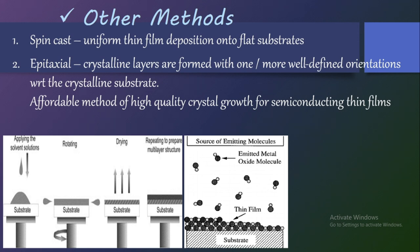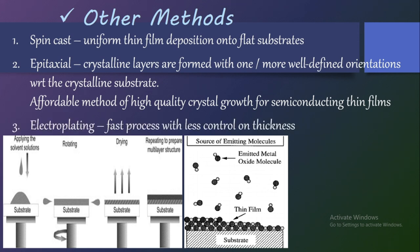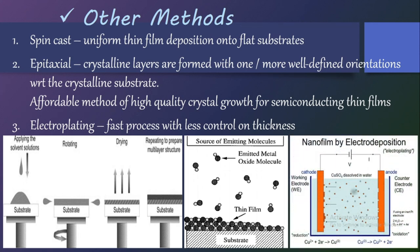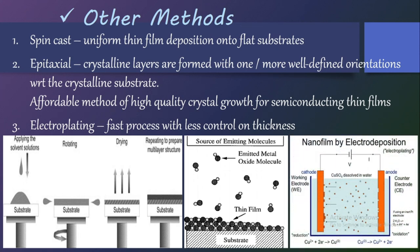The third additional method is electroplating, which is a fast process but offers less control over the thickness of the thin film. This is how electro-deposition or electroplating takes place using electrodes. This was just a rough idea about what thin films are and the different methods to fabricate them.